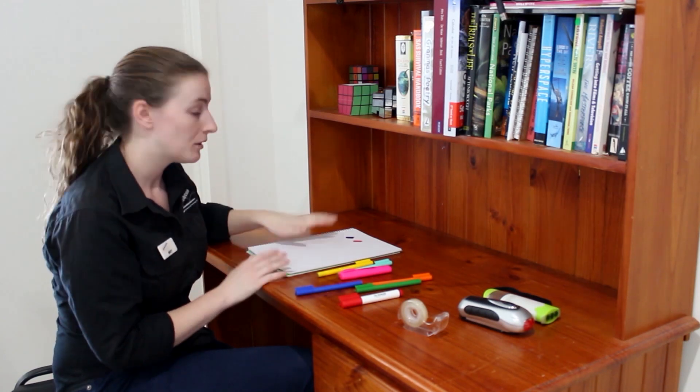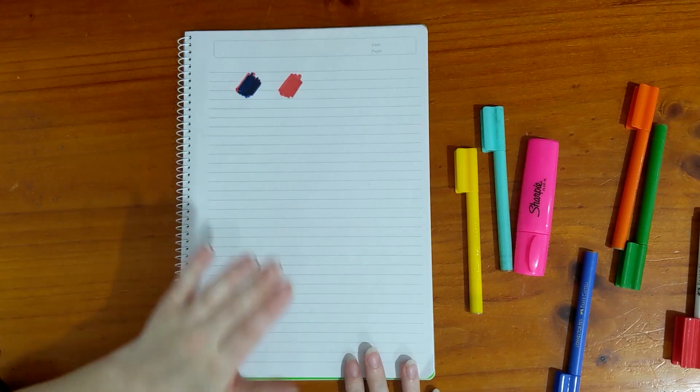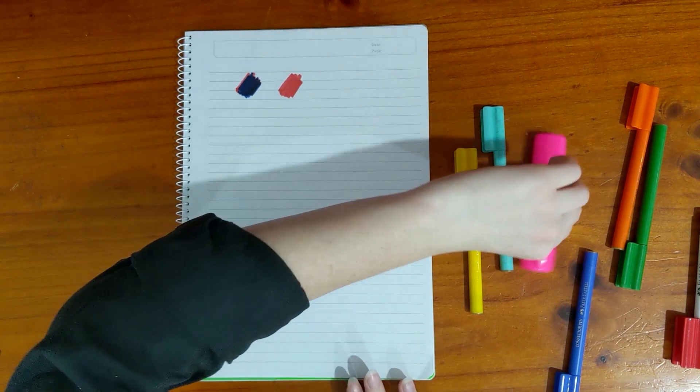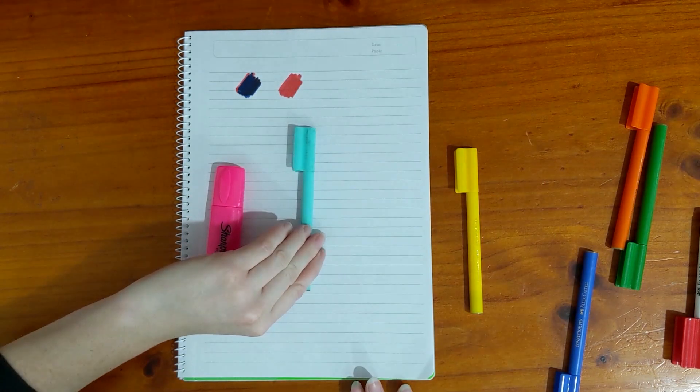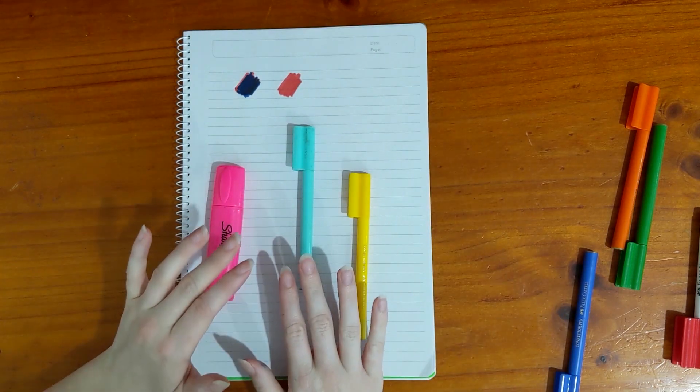If you're using subtractive colour mixing, instead of red, blue and yellow, the primary colours are actually magenta, cyan and yellow. These colours have more than one wavelength reflected.